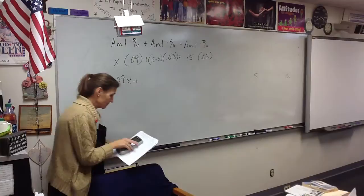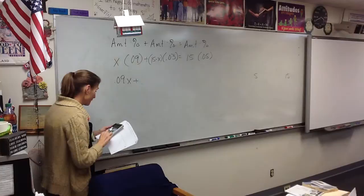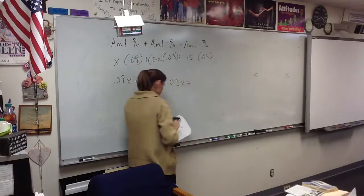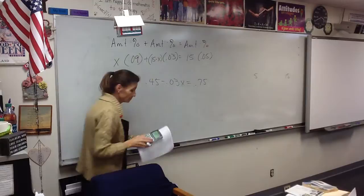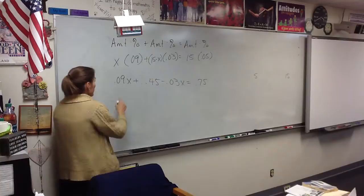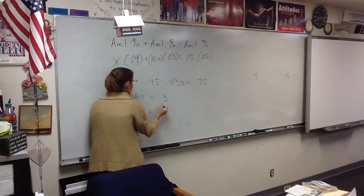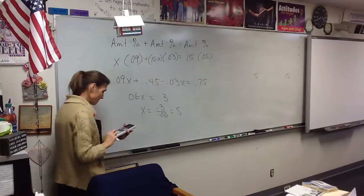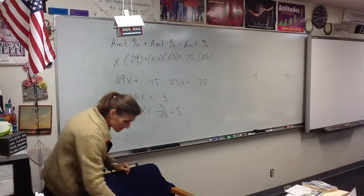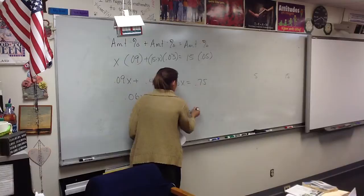So, 0.09X plus, okay now I'm going to use my calculator. 0.45 minus 0.03X equals 0.75. What's 0.09 minus 0.03? 0.06. I think that is 5, isn't it? So, it says label your answer. So, that would be 5 what? 5 gallons.